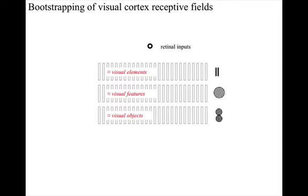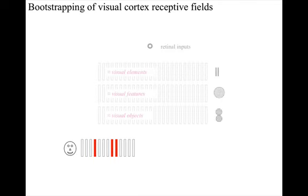Then the number of inputs per neuron into the higher visual areas from lower visual areas can be such that, as receptive fields are heuristically defined, they're effective for discriminating between the appropriate circumstances.